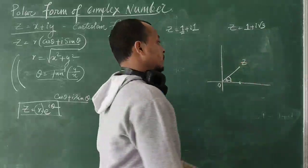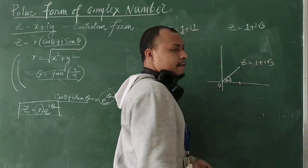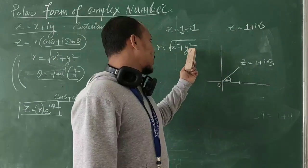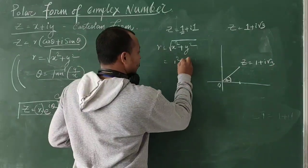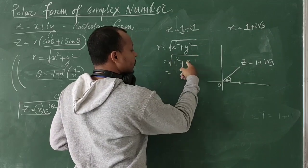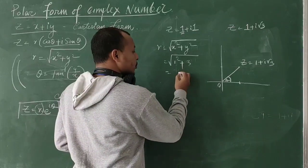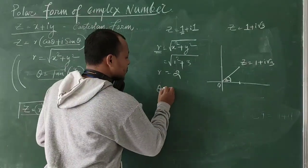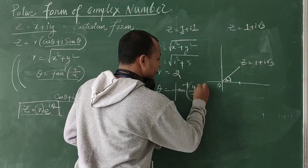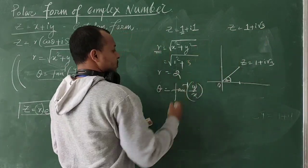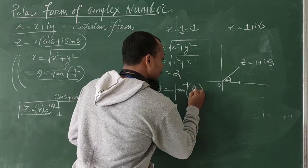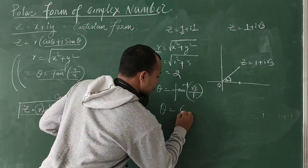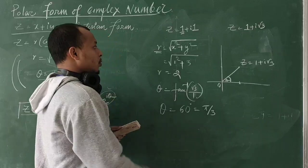Now we solve the next one: Z = 1 + i√3. R = √(X² + Y²) = √(1² + (√3)²) = √(1 + 3) = √4 = 2. Since distance is always positive, R = 2.